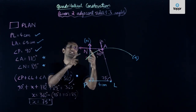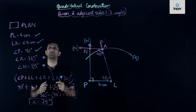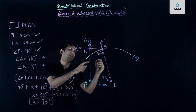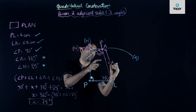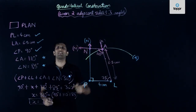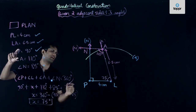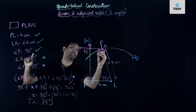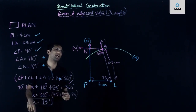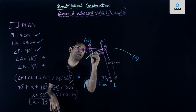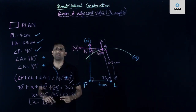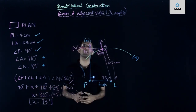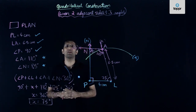We only have to label the various sides and angles given in the question. PL is labeled as 4 centimeters. LA measures 6.5 centimeters. Angle P is labeled as 90 degrees. Angle A is 110 degrees. And angle N is 85 degrees — if you measure this angle N, we will find it measures 85 degrees. So we have now obtained the quadrilateral when given two adjacent sides and three angles.